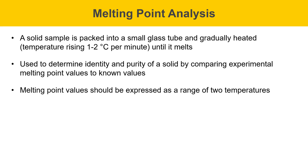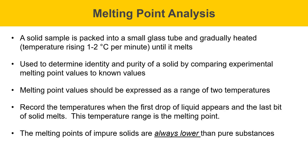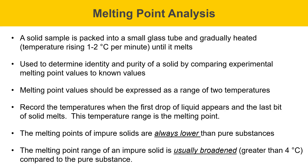Melting point values should be expressed as a range of two temperatures. You'll want to record the temperature when the first drop of liquid appears, and when the last bit of solid melts. This temperature range is the melting point — it's more than just one number, it's a range. The range tells you something about purity as well. The melting point of an impure solid is always lower than the pure substance, and the melting point range of an impure solid is usually also broadened.